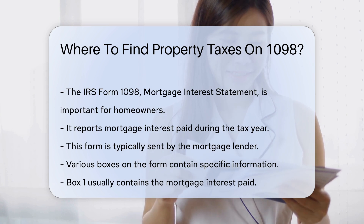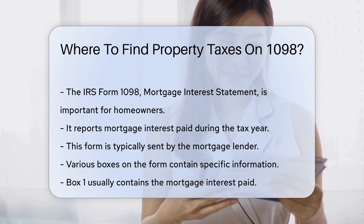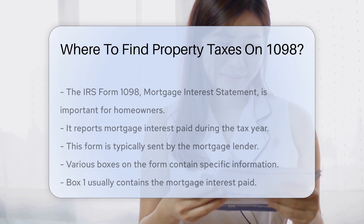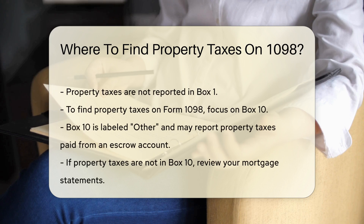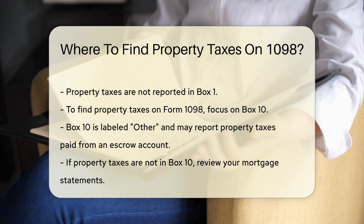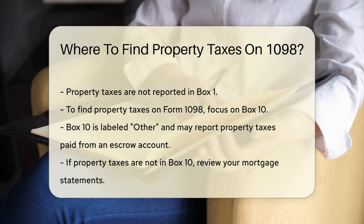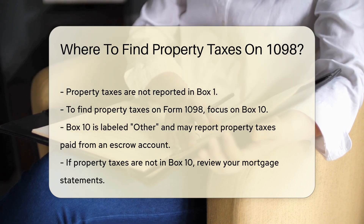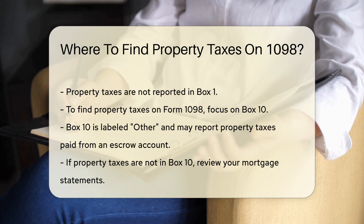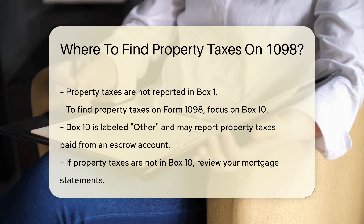Box 1 usually contains the mortgage interest paid. However, property taxes are not reported in Box 1. To locate property taxes on Form 1098, focus on Box 10. Box 10 is labeled "Other" — this is where property taxes paid from an escrow account may be reported.